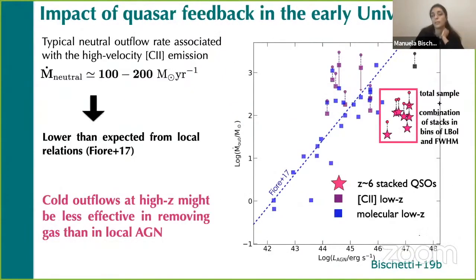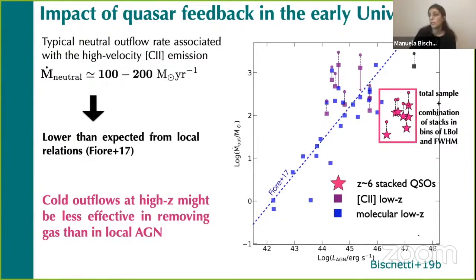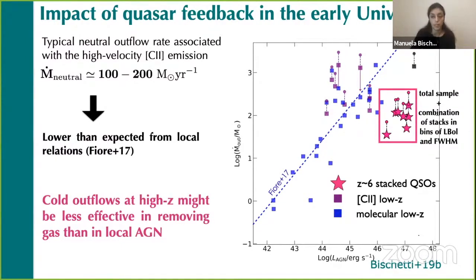We also tried to characterize the impact of these outflows. We derived the typical neutral mass outflow rates of the order of 100–200 solar masses per year, which are lower than what is expected from the local relation. This may be telling us that cold outflows at high redshift might be less efficient in removing gas than in local AGN.